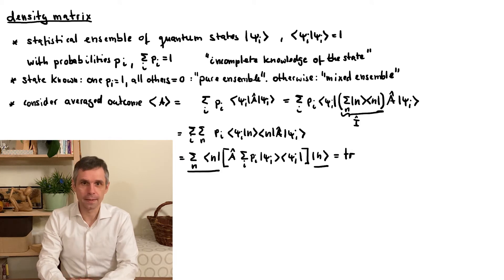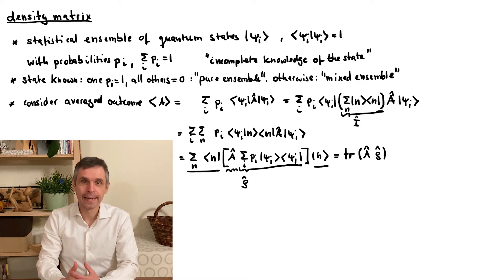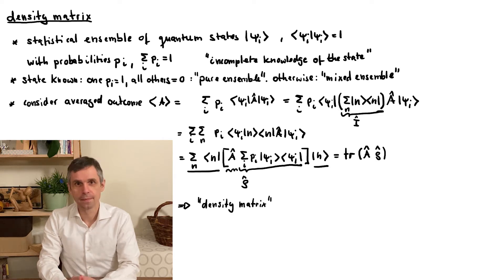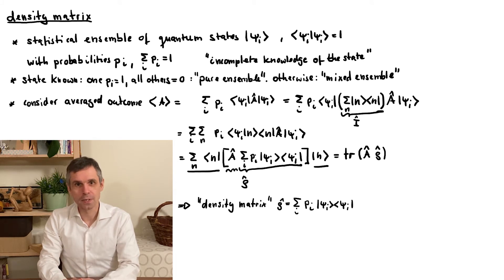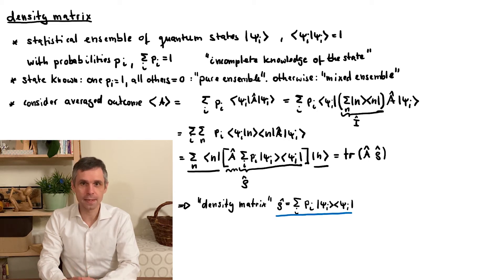Secondly, the operator that we apply this to is a product of the observable A and a new operator which only contains information about the ensemble, and therefore encodes all the physically relevant information this contains. This operator, denoted here as rho, we call the density matrix. This operator is given as a sum with these probabilities and the quantum states. So instead of working with individual quantum states, we now have an operator that describes the whole collection of these states. And this suffices to determine all the expectation values in this more general situation. This expression for the density matrix and the rule for determining expectation values from it are two central results of this segment.